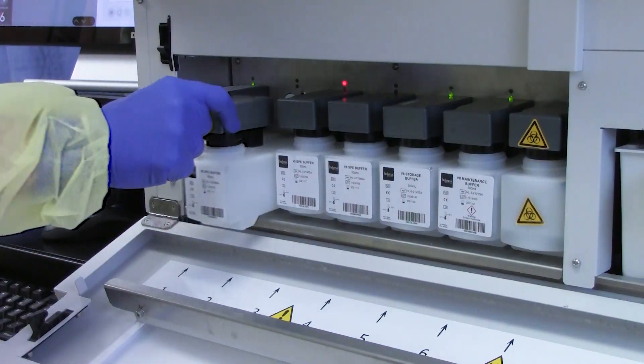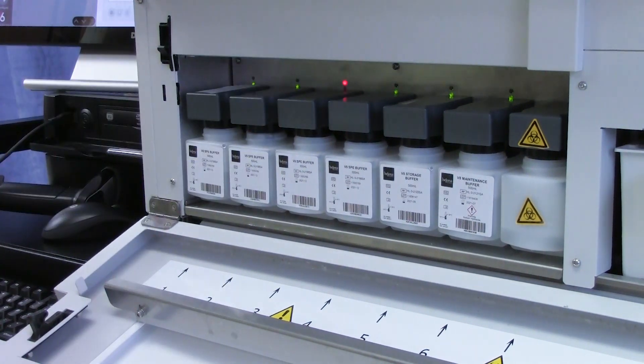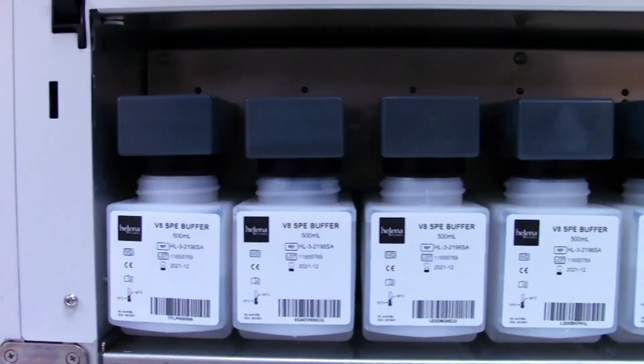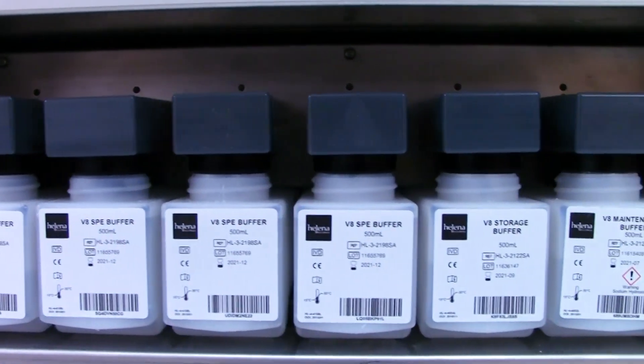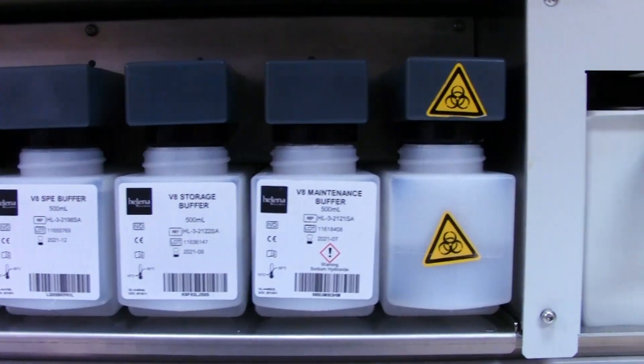Helena's capillary electrophoresis utilizes ready-to-use buffers and high voltage to separate the proteins in a small-bore glass capillary tube with an interior diameter of 50 microns.